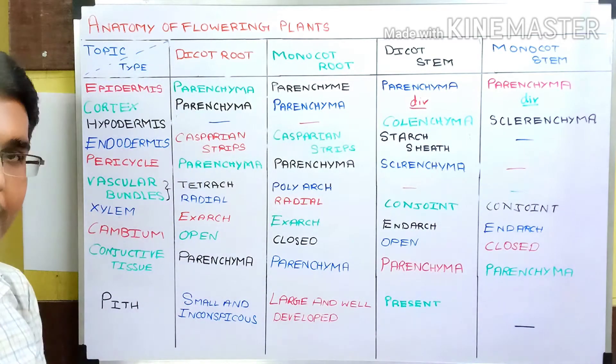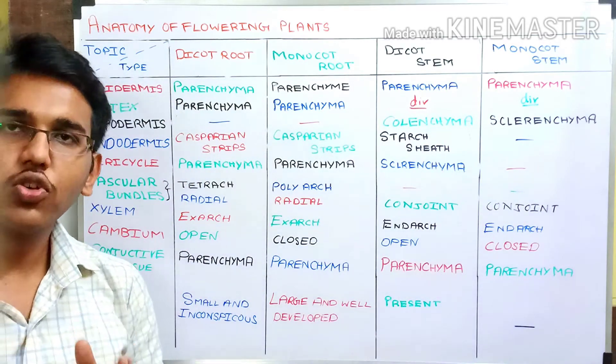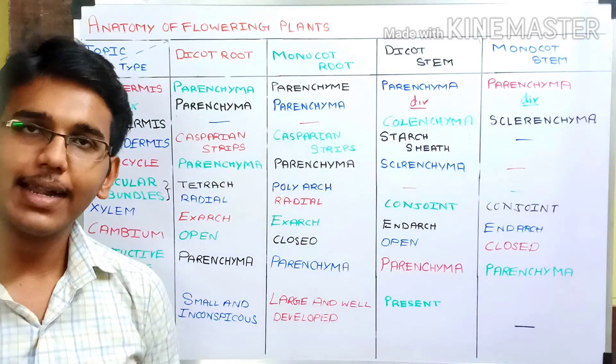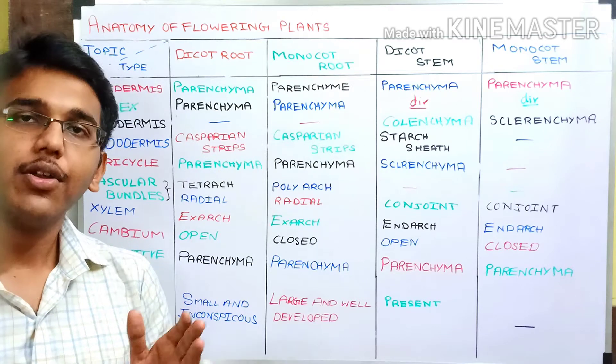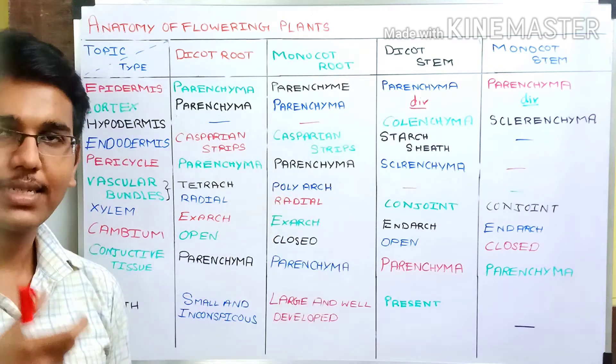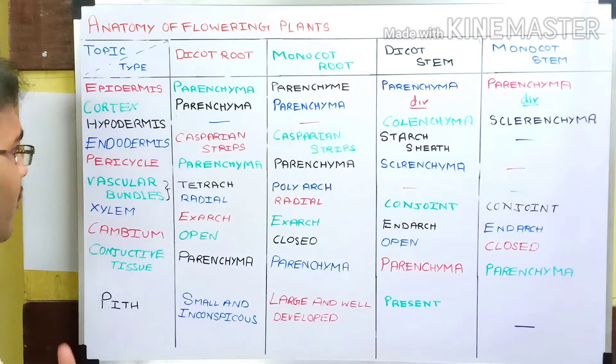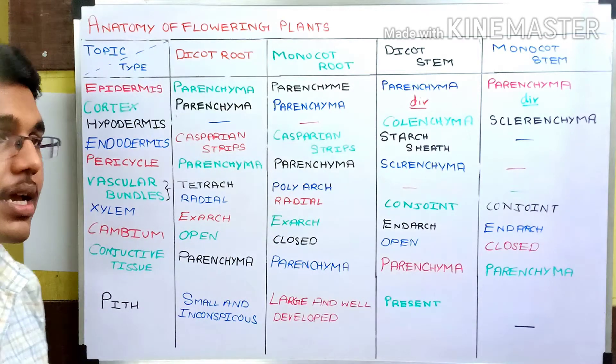The pericycle is also made up of parenchymatous tissues in roots.